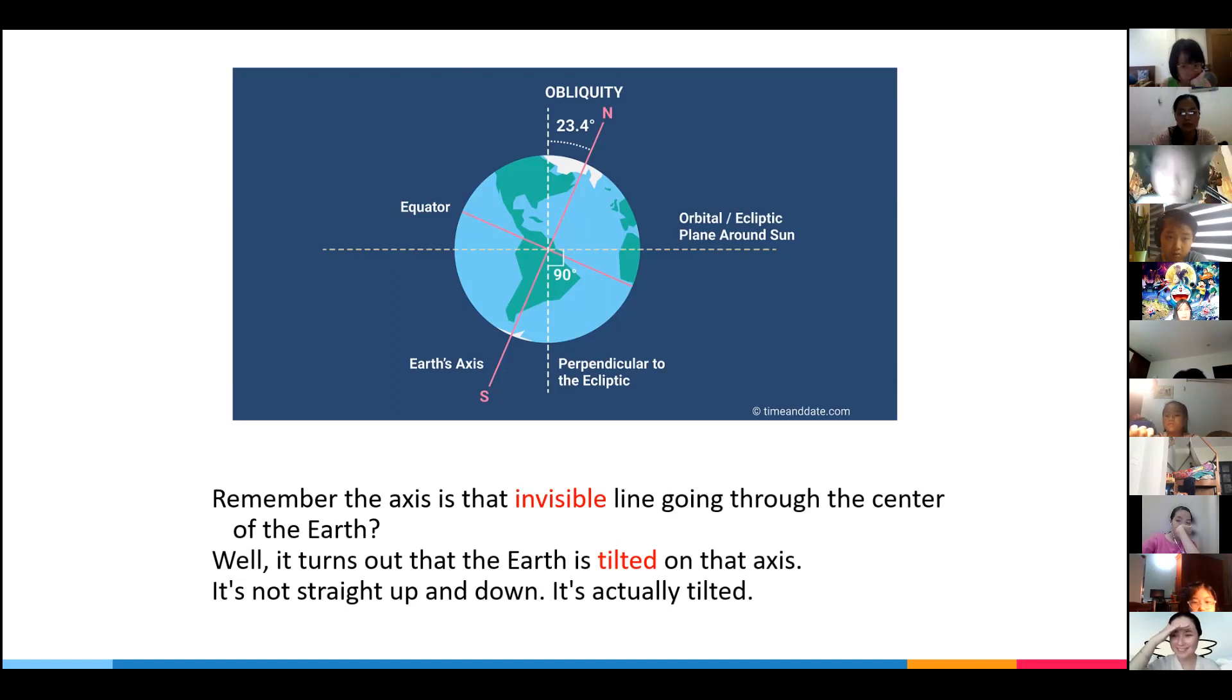Is there a line going through the center of the Earth? So there is really no line, right? We don't see it. The axis is the line but we don't see it. There's no line, it's just invisible.